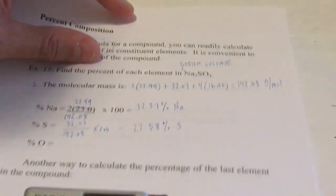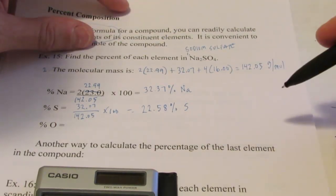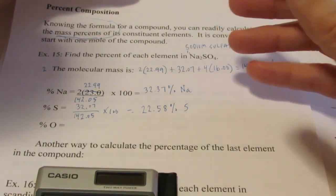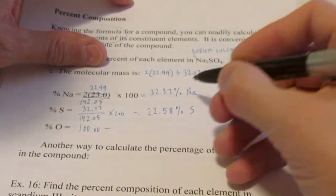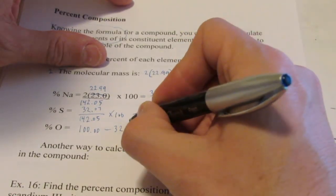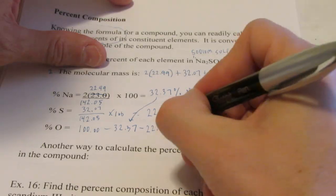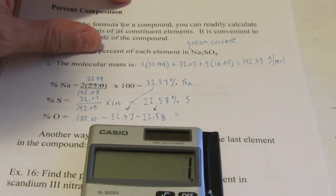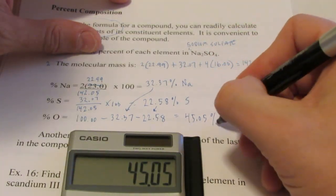The sum of the percentages by weight of each element has to add up to 100% of the overall weight. So another way to find the last element is to start with 100 and subtract the percentages of the other elements: 100 minus 32.37% sodium minus 22.58% sulfur. Whatever's left is the percent by weight of oxygen, which gives 45.05% oxygen.